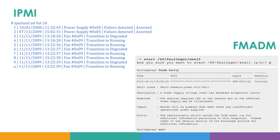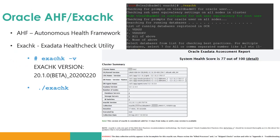Next we have fmadm, which is a Fault Management Administration command that provides detailed information about faulty components on a particular Exadata server — whether on a storage server or compute server. You can use fmadm via 'start /SP/faultmgmt/shell' and then run 'fmadm faulty', which lists all faulty components along with detailed error information, the impact, and the action you need to take. This fmadm output is helpful for Oracle Support to replace the particular faulty component, and you can also clear the alert once the part has been replaced.